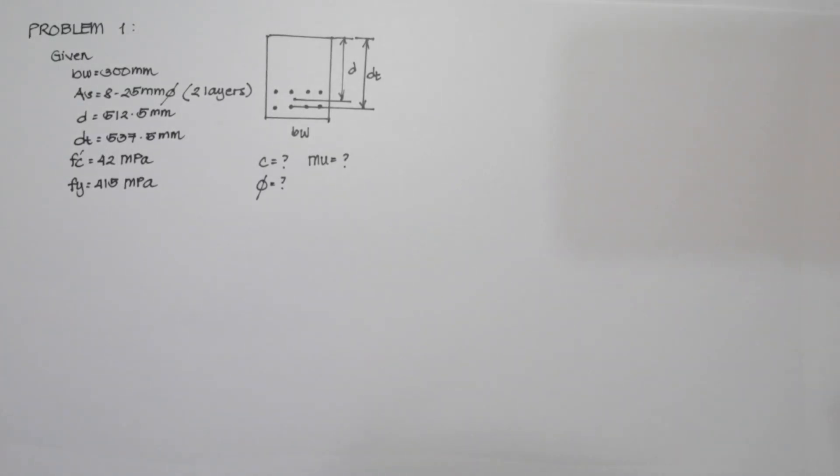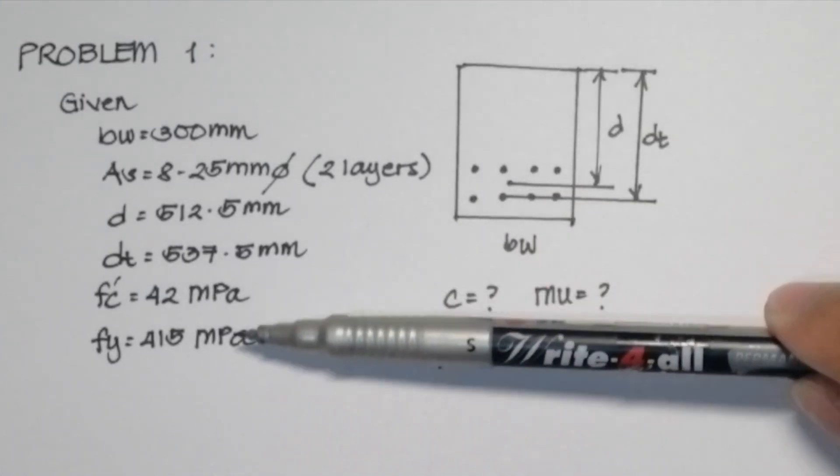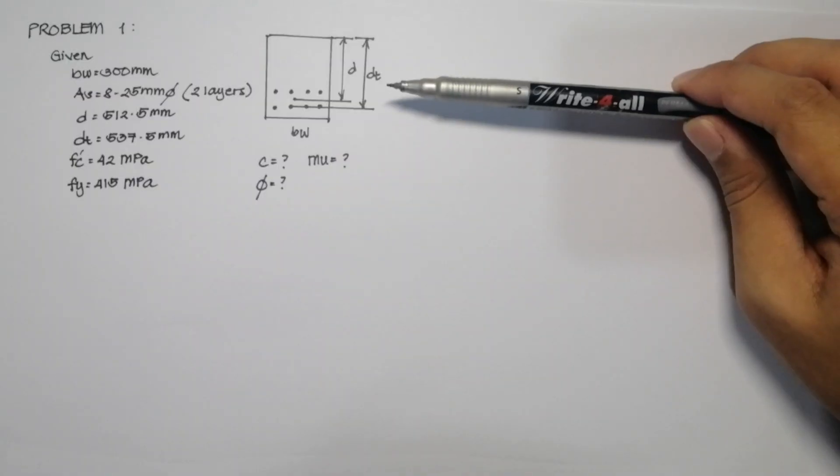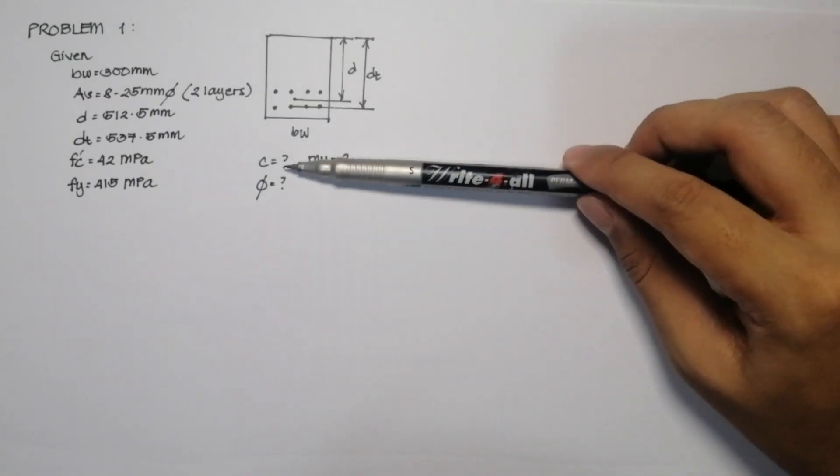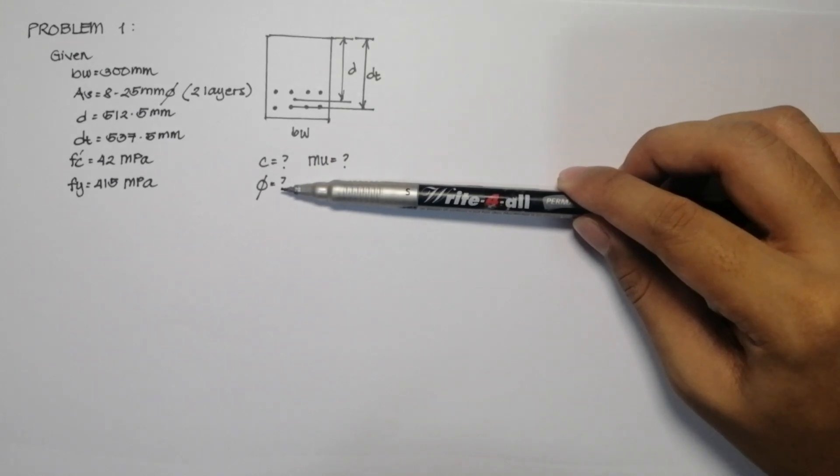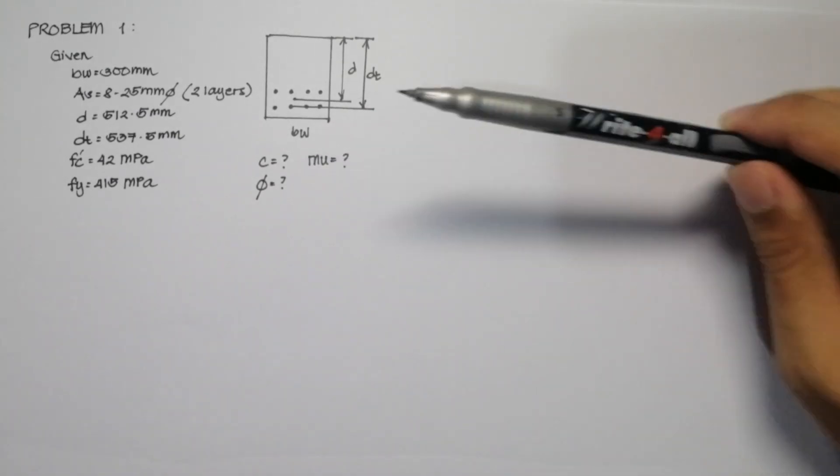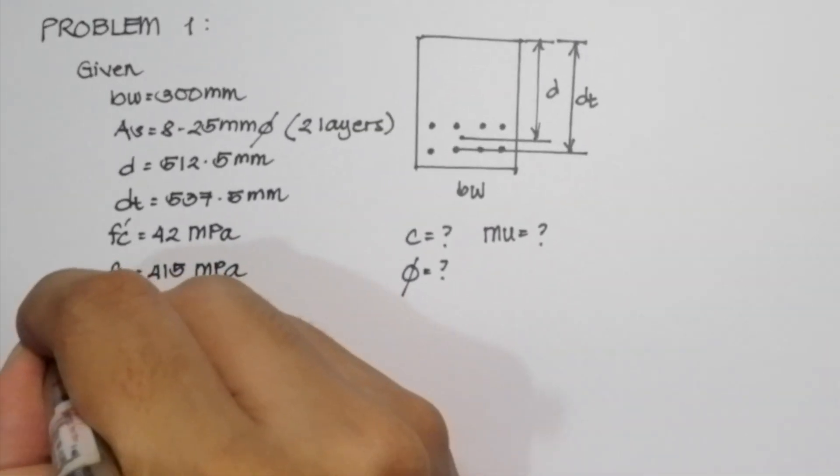Our compressive strength of the concrete is 42 MPa, while the Fy, or the yield strength of the steel, is 415 MPa. We are tasked to find the value of C, or the depth of the neutral axis, phi, or the value of the reduction factor, and the Mu, or the ultimate moment, or what we call the design flexure.